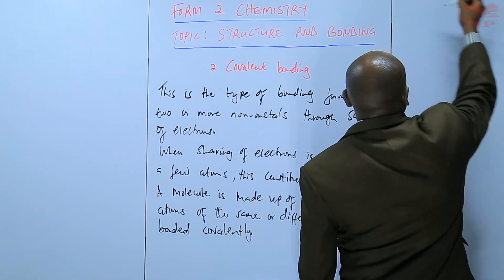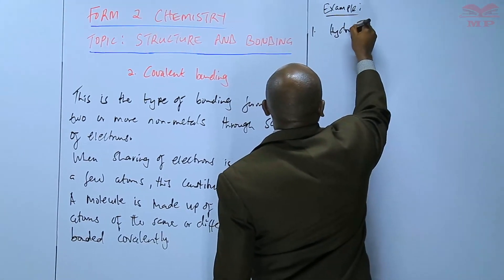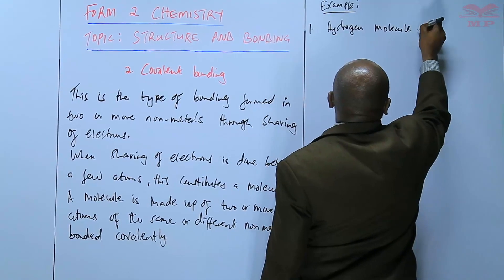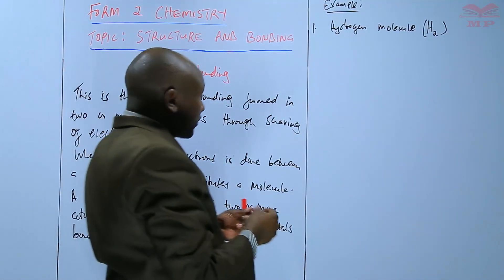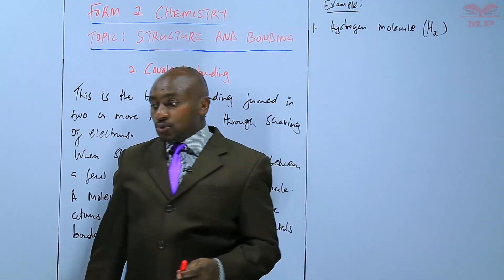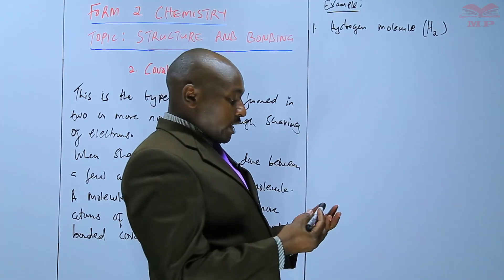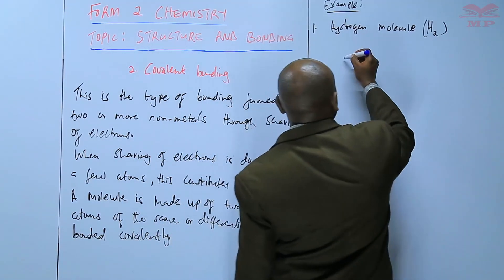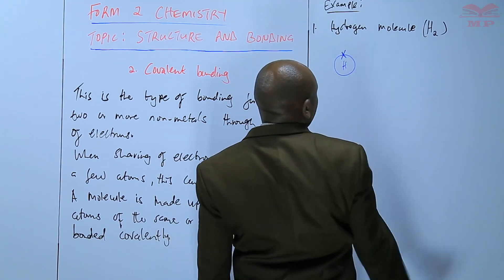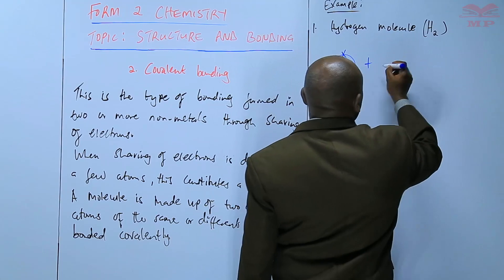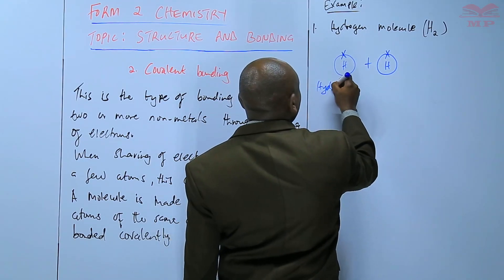Let's take an example: the hydrogen molecule, written as H2. The hydrogen molecule is made of two hydrogen atoms. When two hydrogen atoms are combined together, they form a hydrogen molecule. A hydrogen atom has only one electron.